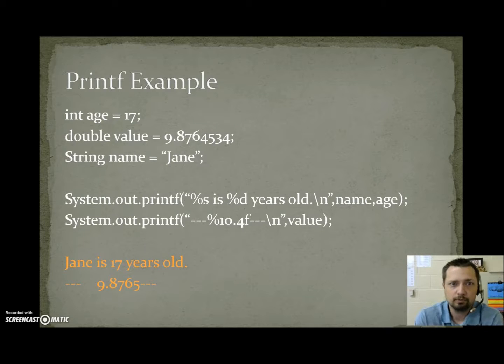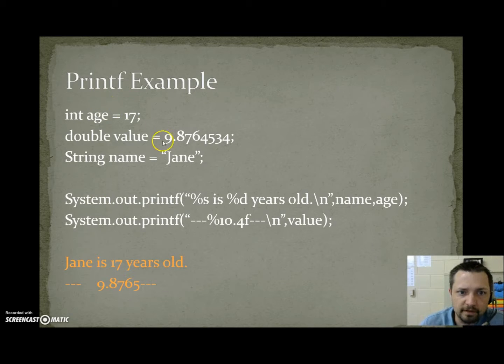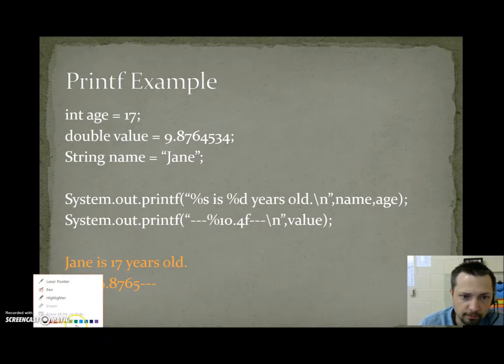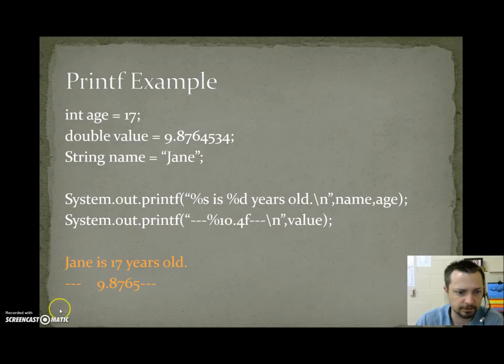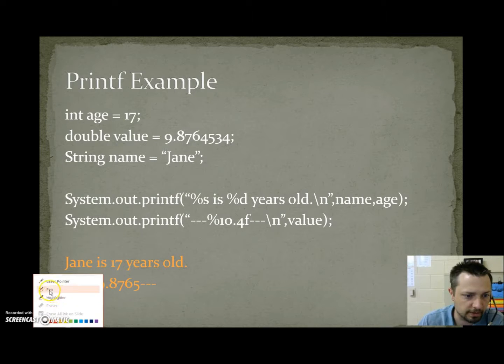We're going to look at a quick example for printf. Int age equals 17. Double value equals 9.8764534, which is a pretty long number. And we have string name, Jane. Now I'm going to go ahead and grab the pen.